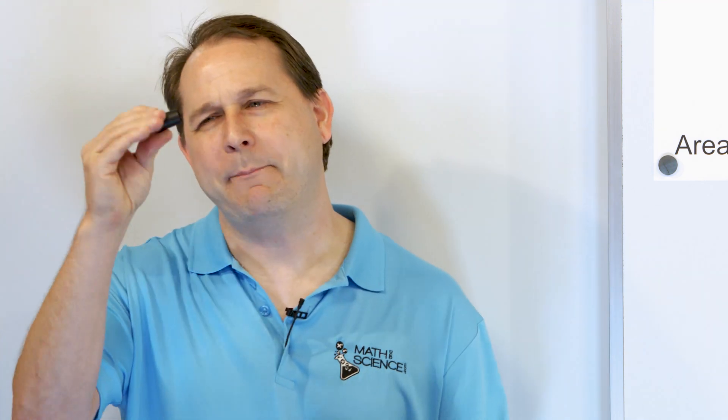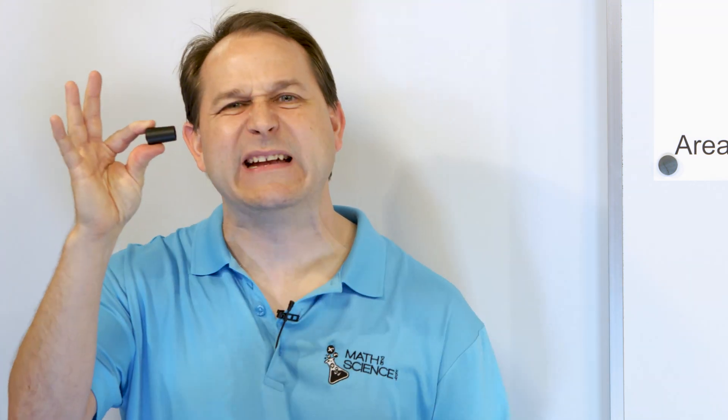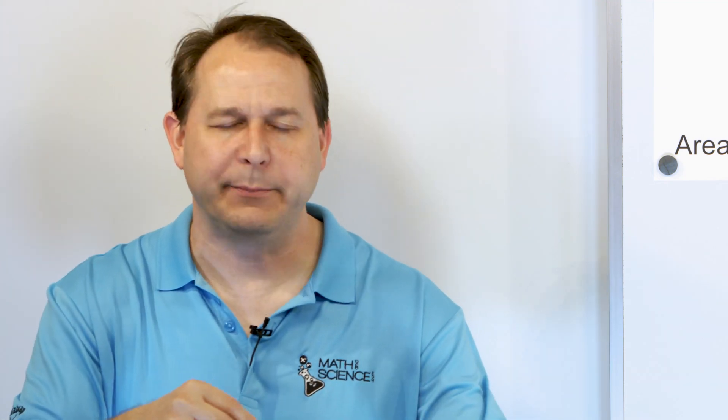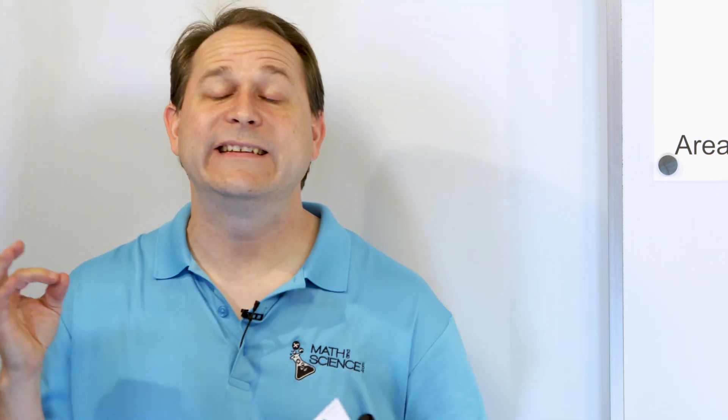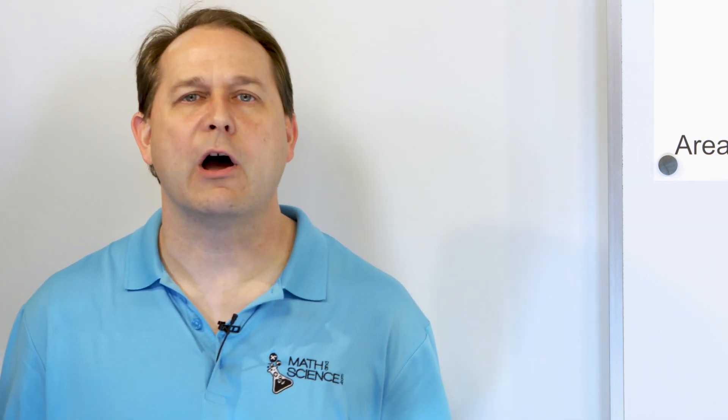Before I can talk to you about what area means, we have to talk about length. We already know that we have been measuring things in different units. We've talked about inches. We've talked about centimeters. So just as a refresher, an inch is about as long as this cap there — that's about an inch long, roughly speaking. And a centimeter is the other unit of length we've been talking about. It's about the width of my finger. That's about a centimeter.